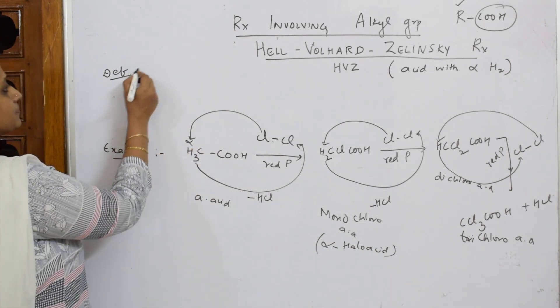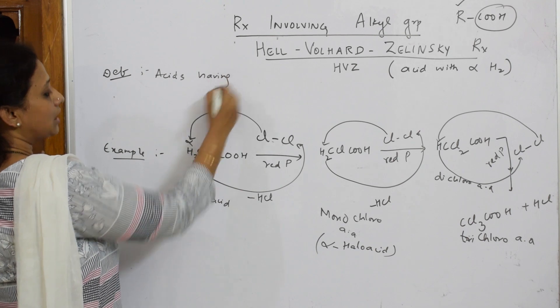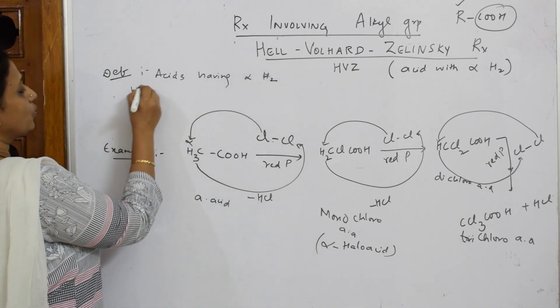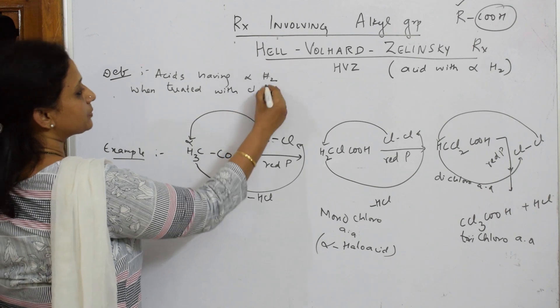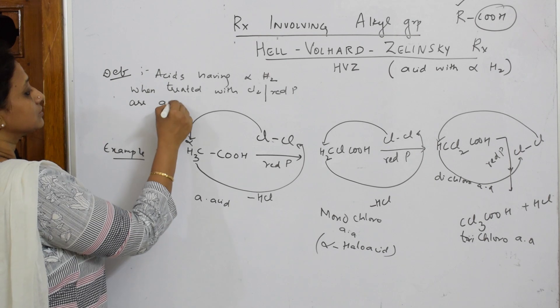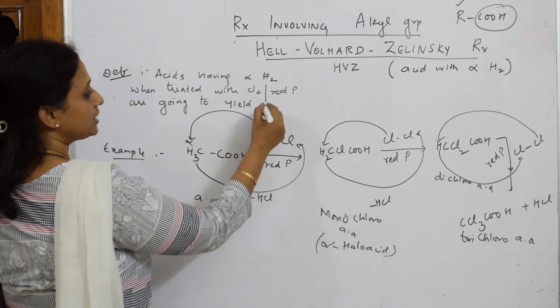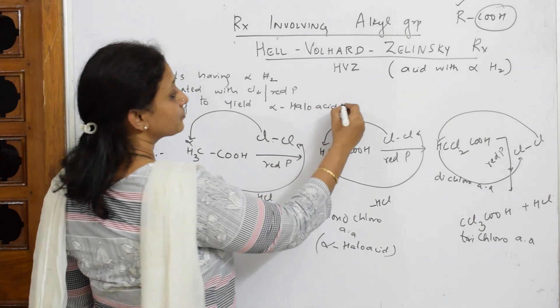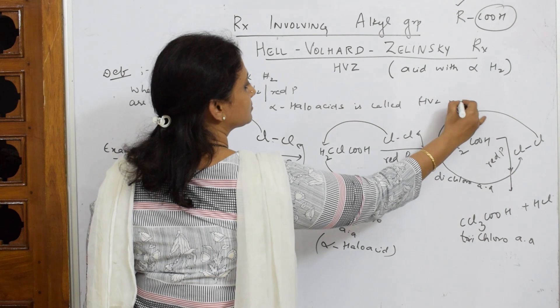Let us write this - these are alpha halo acids. Now I'm going to write the definition. Alpha halo acids having alpha hydrogen when treated with chlorine in the presence of red phosphorus are going to give or yield alpha halo acids. That means at the alpha position there is a halogen, it's called HVZ reaction.